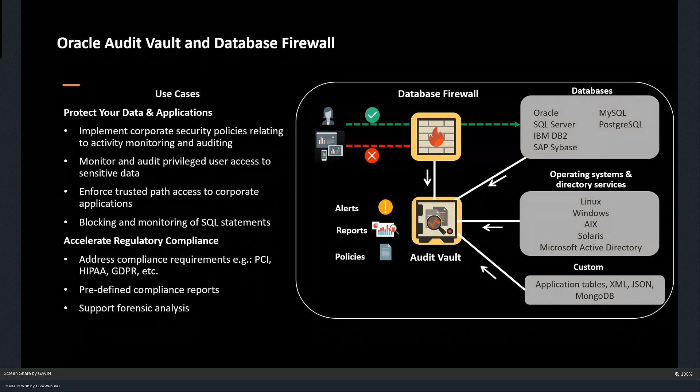Once data is stored in the repository, I can generate alerts, create policies, and generate reports — all coming from data stored in the audit vault server. Targets send data through agents. I install an agent on the target machine. For a Linux machine running an Oracle database, the same agent can be used for sending data at the OS level as well as the database level. I'll show you how to enroll a database — there's a certain procedure to follow, and I'll cover how to enroll a database in the demo.